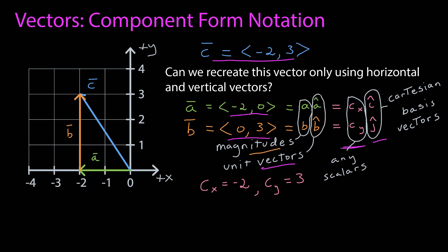Well from the graph we can see that c-x is negative 2 and c-y is 3. Since i-hat points in the positive x direction we have to multiply it by negative 2 to give it a magnitude 2 pointing in the negative x direction. To recreate the vector b we simply need to multiply j-hat by 3 to give it a magnitude 3, it is already pointing in the positive y direction.